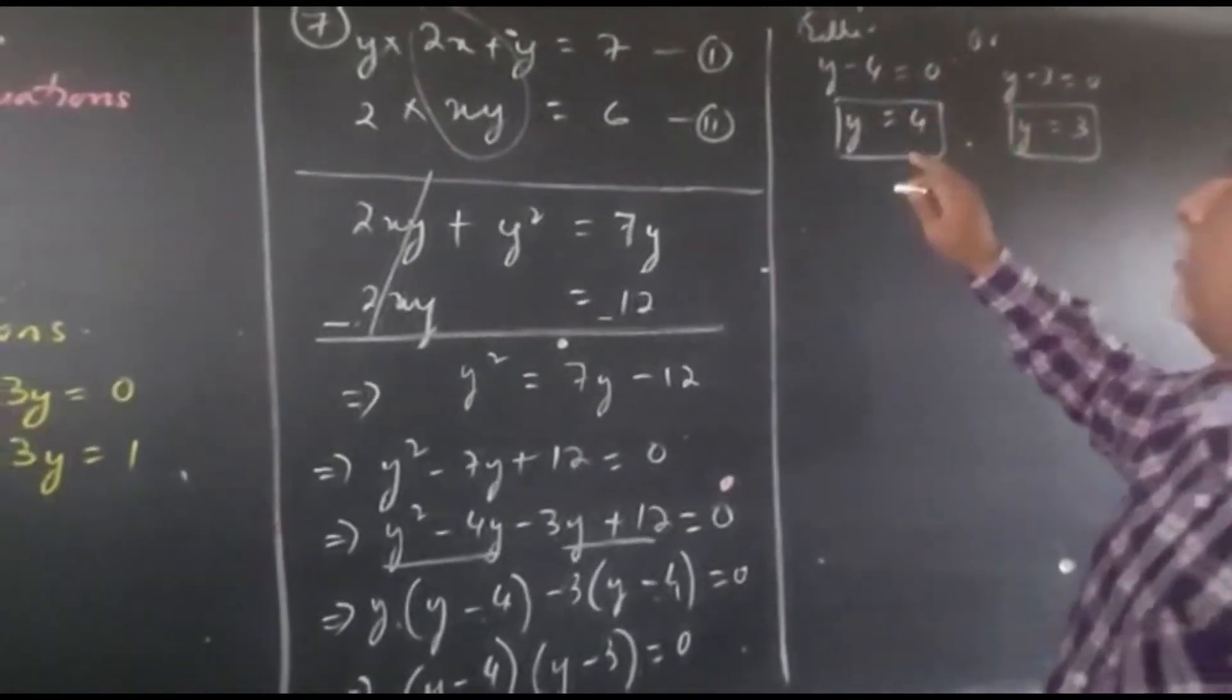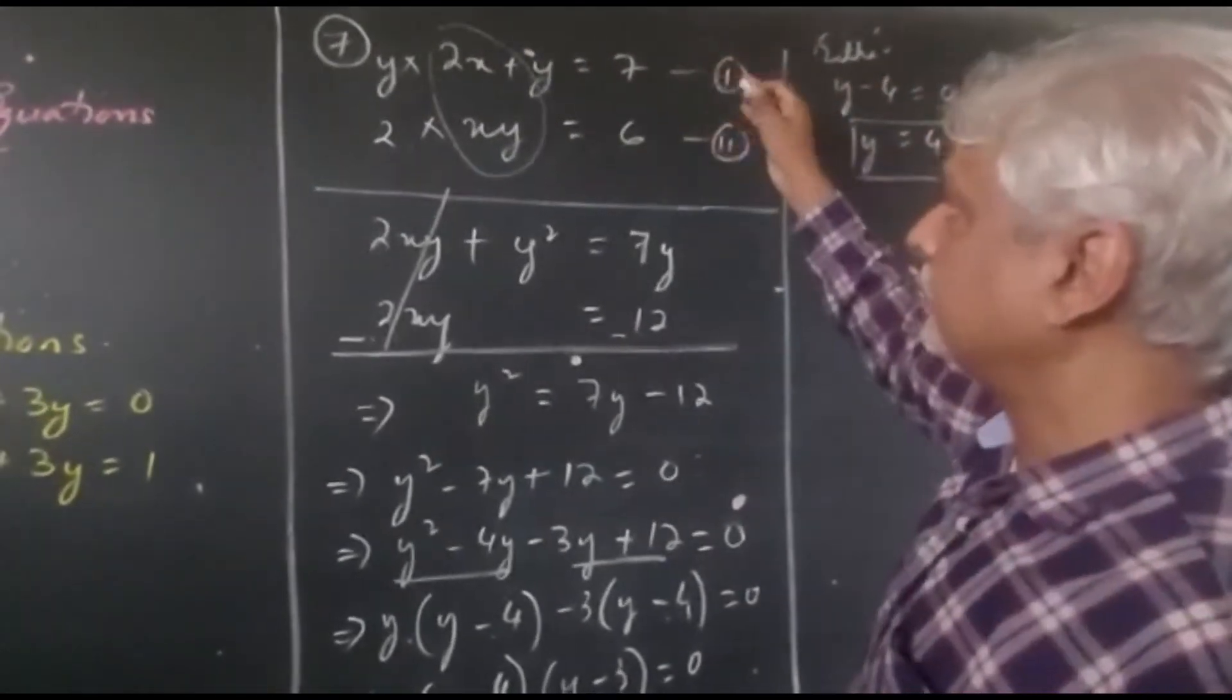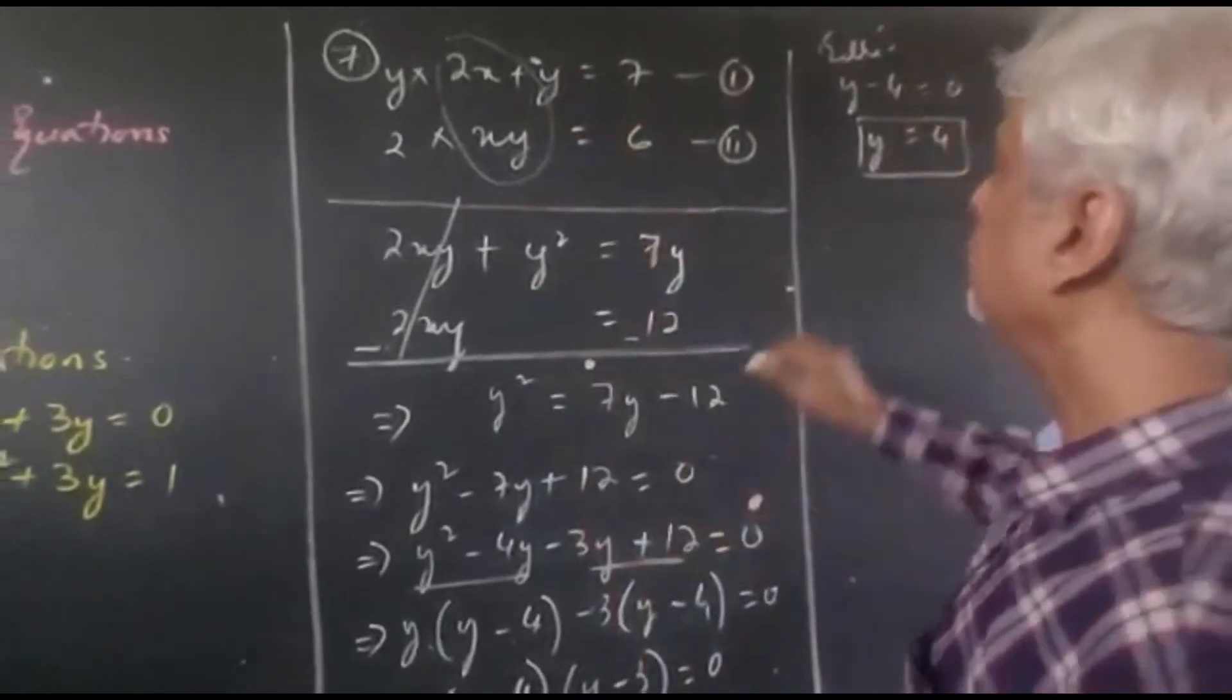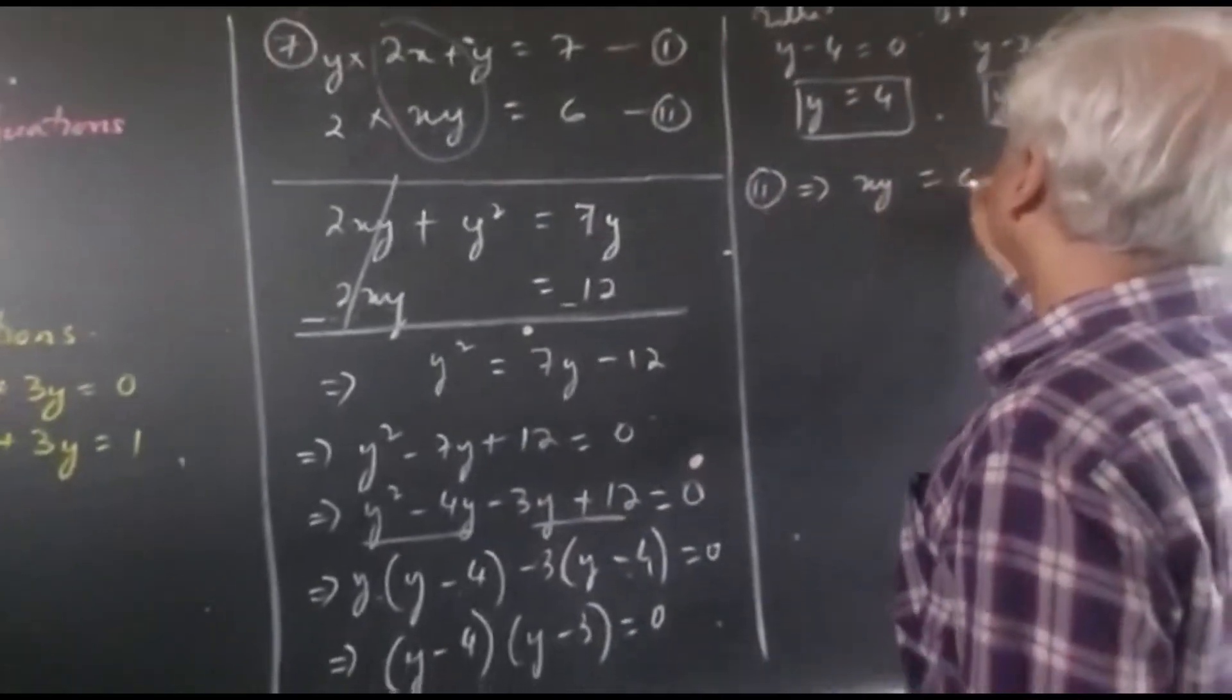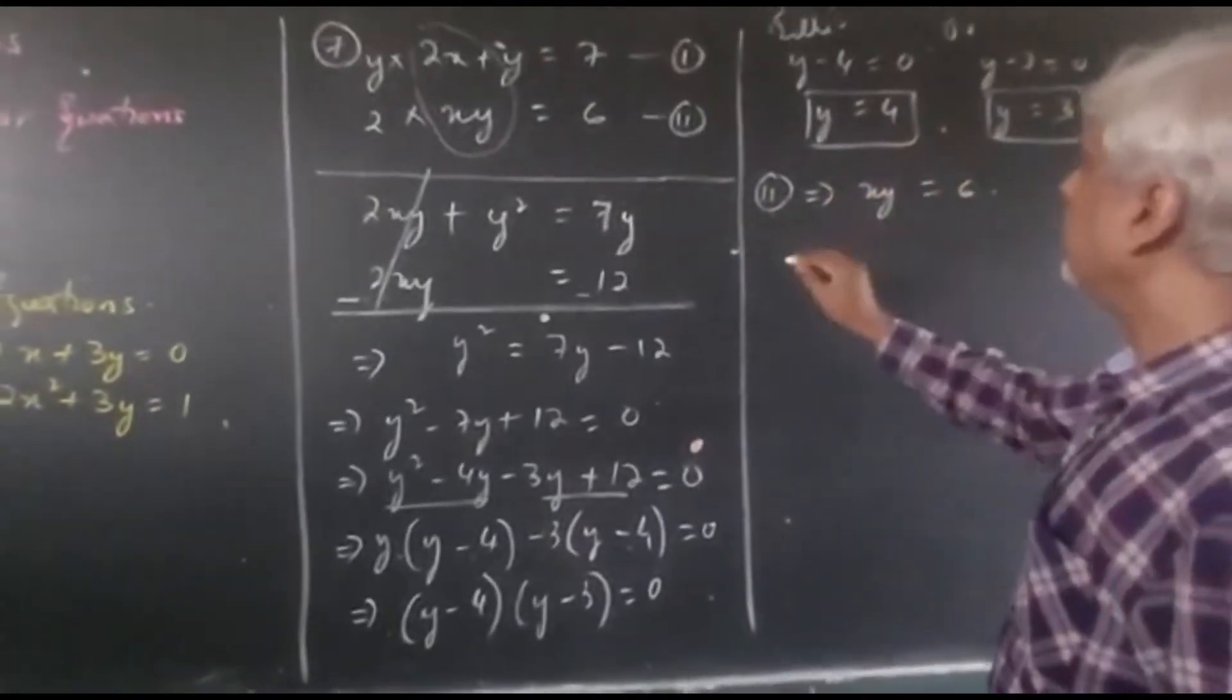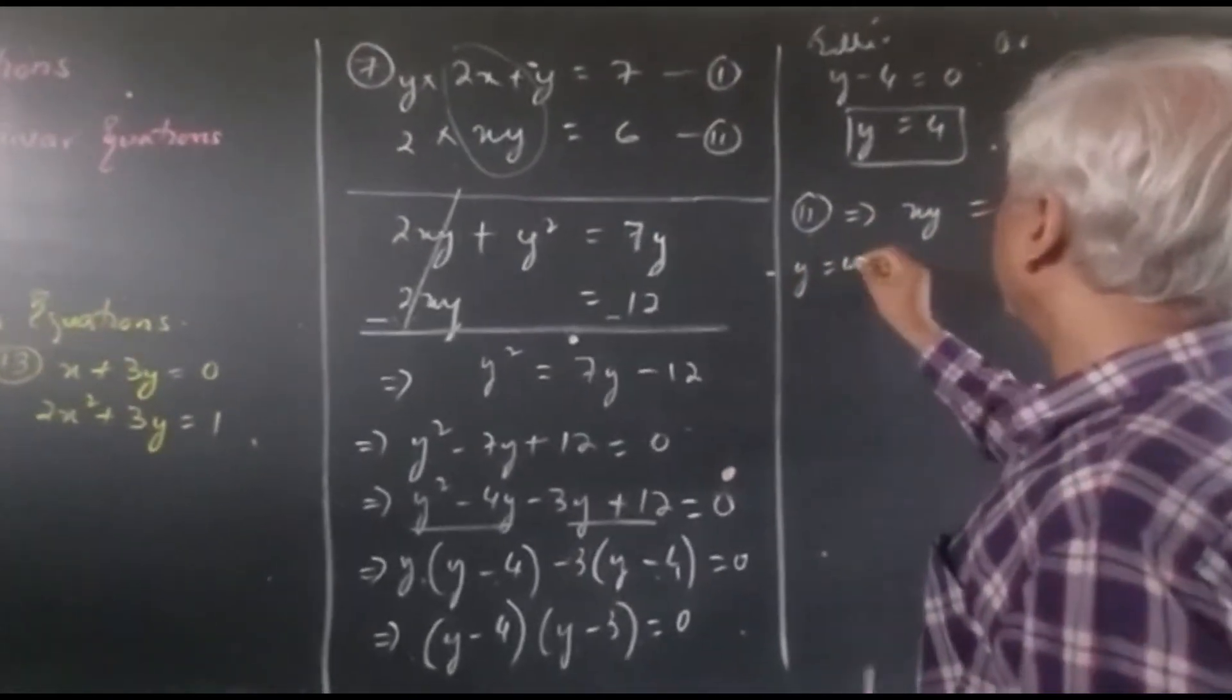Now let's substitute the value of y equals 4 in any one of these equations. It's easier to take the second equation. As you know, the second equation is xy equals 6. It's a simplified form. So taking y equals 4, you will get the value of x.